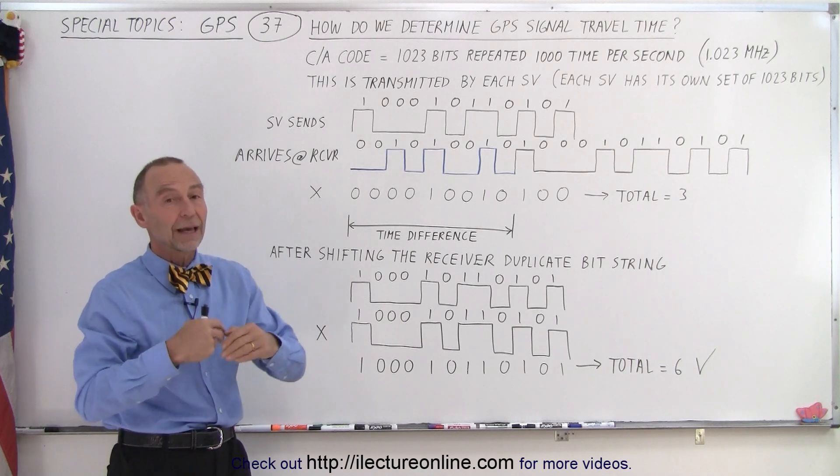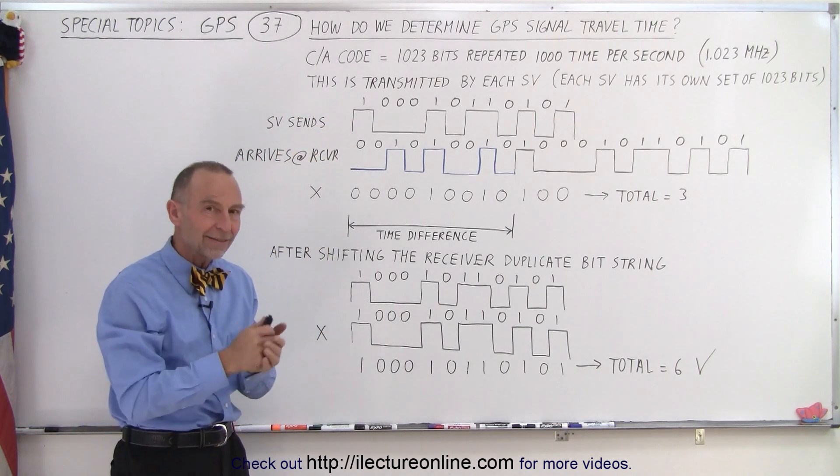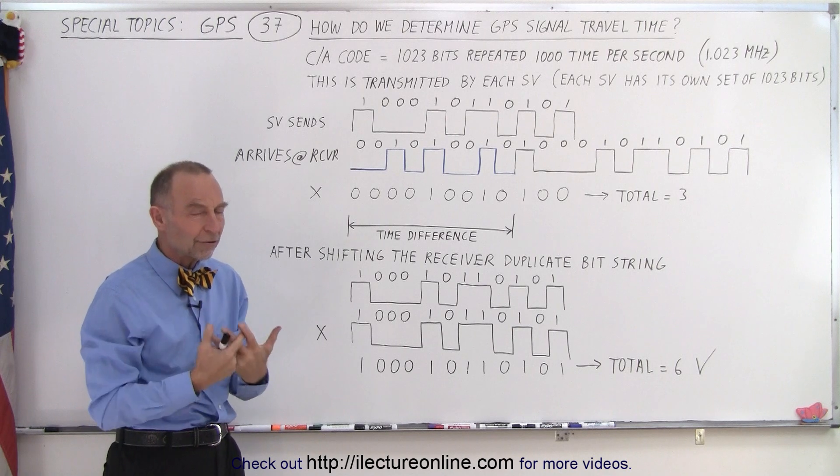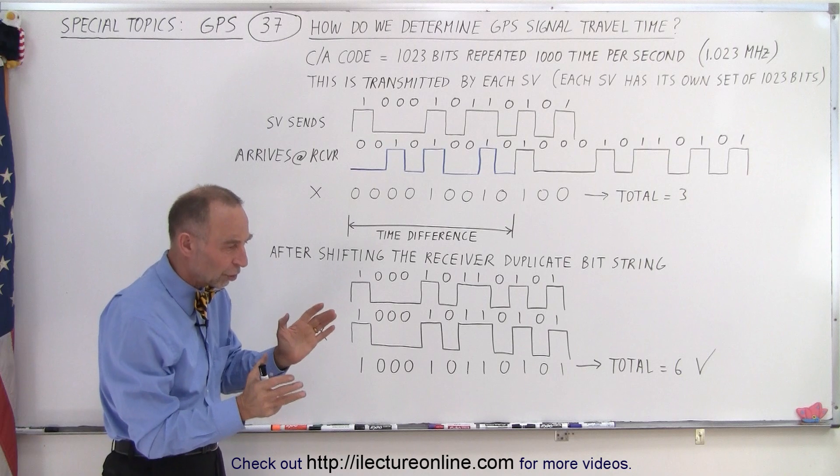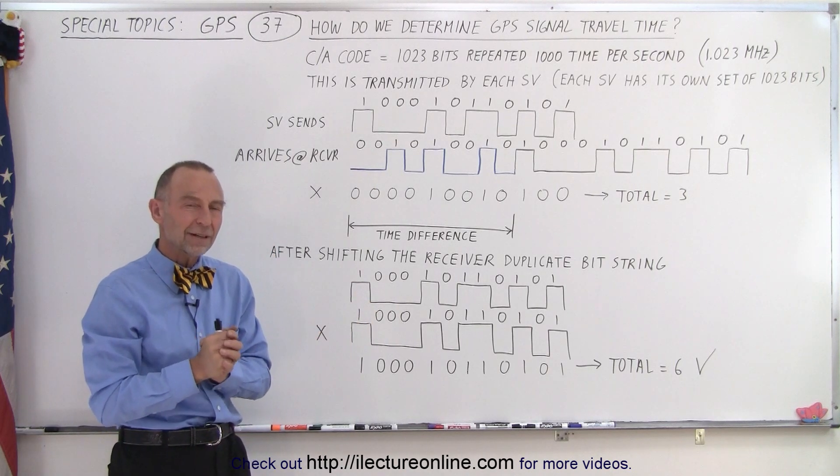This gives us the exact time between when the SV sends the signal and when the receiver receives the signal. So first we need to do a rough range calculation using the almanac for that particular satellite. That gives us close enough to get within a few tenths of a millisecond.